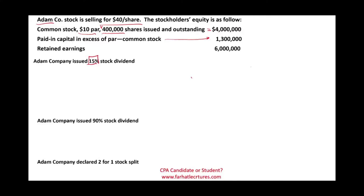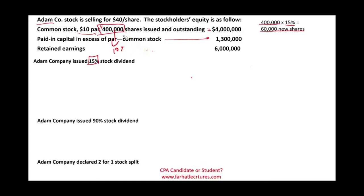When dealing with a small stock dividend, the first thing we have to do is compute how many new shares we are issuing. Right now we have 400,000 shares outstanding, and we are issuing 15% additional shares to be distributed proportionally to the shareholders. Taking 400,000 shares times 15%, we issue 60,000 new shares. If you own 10% of the stock, you will get 10% of the 60,000. If you own 1%, you will get 1% of the 60,000.